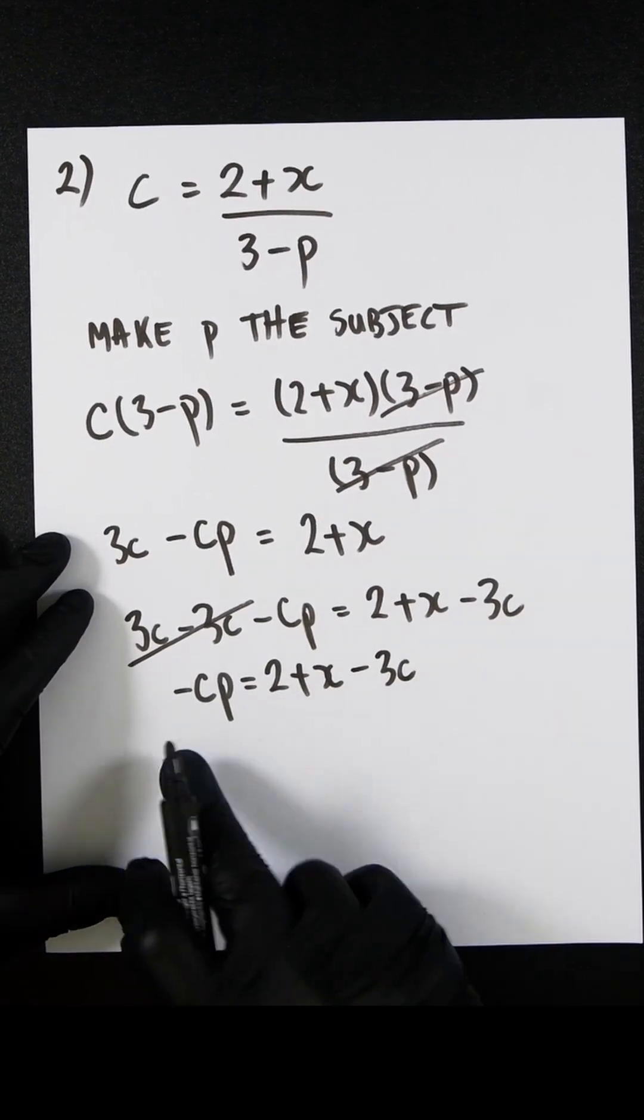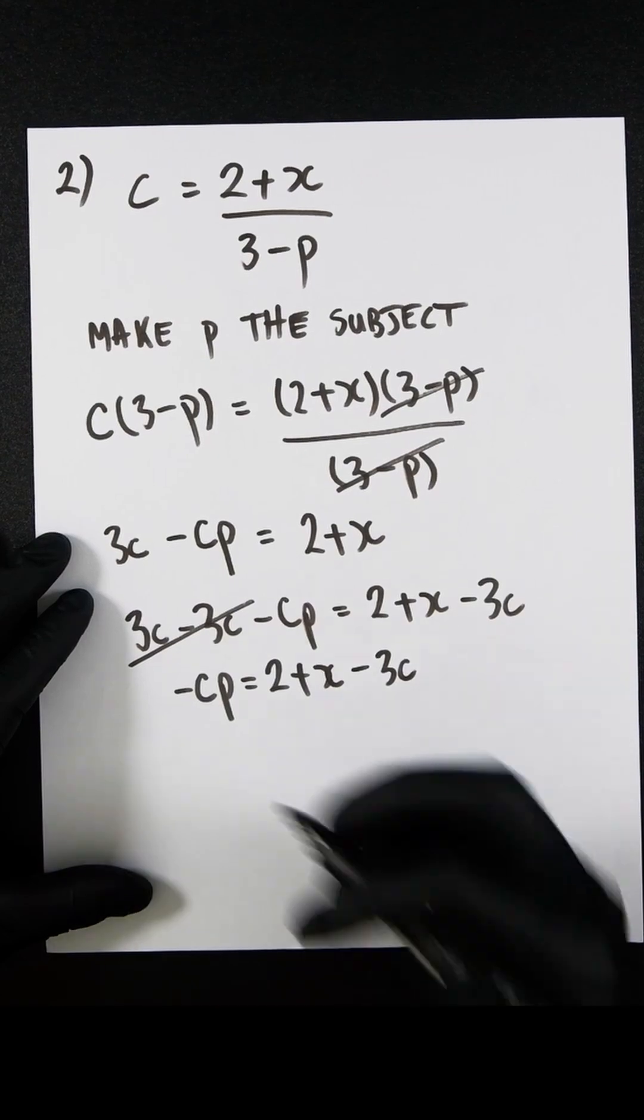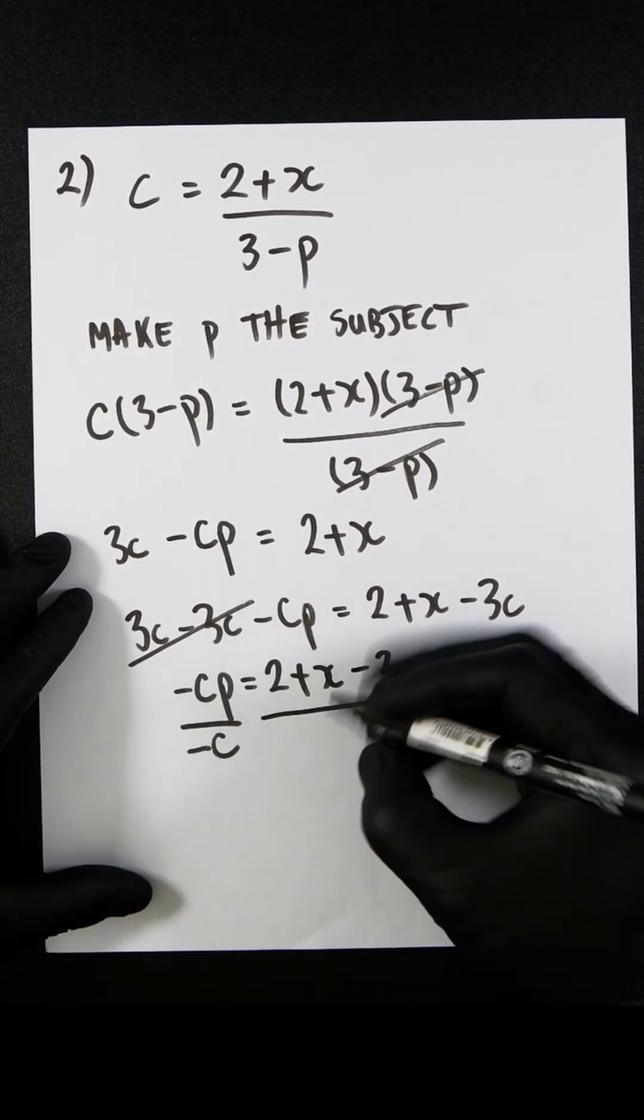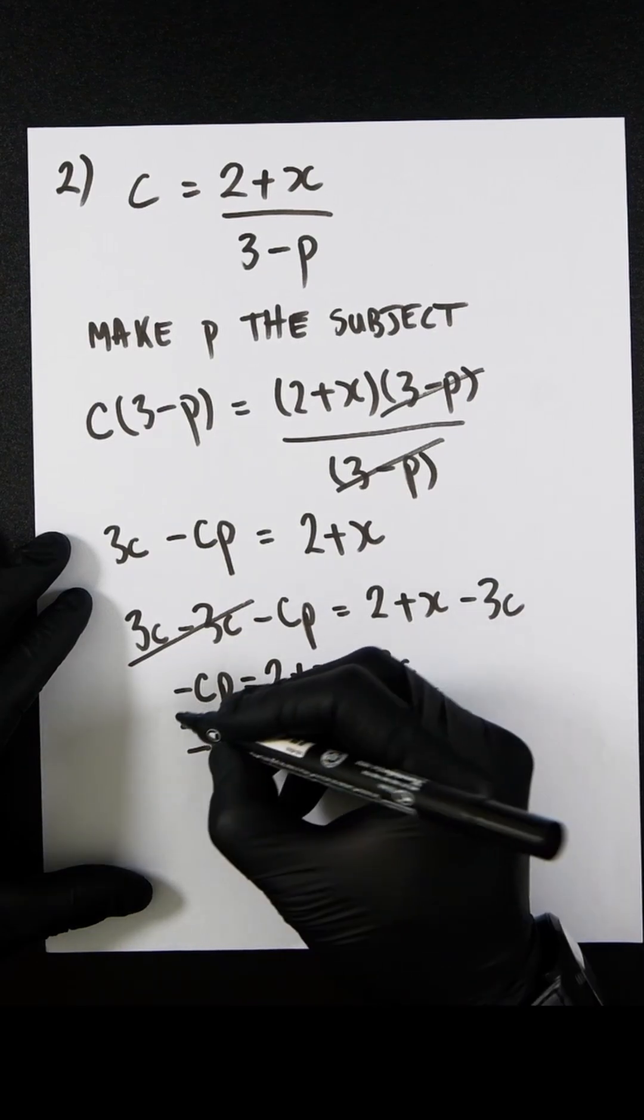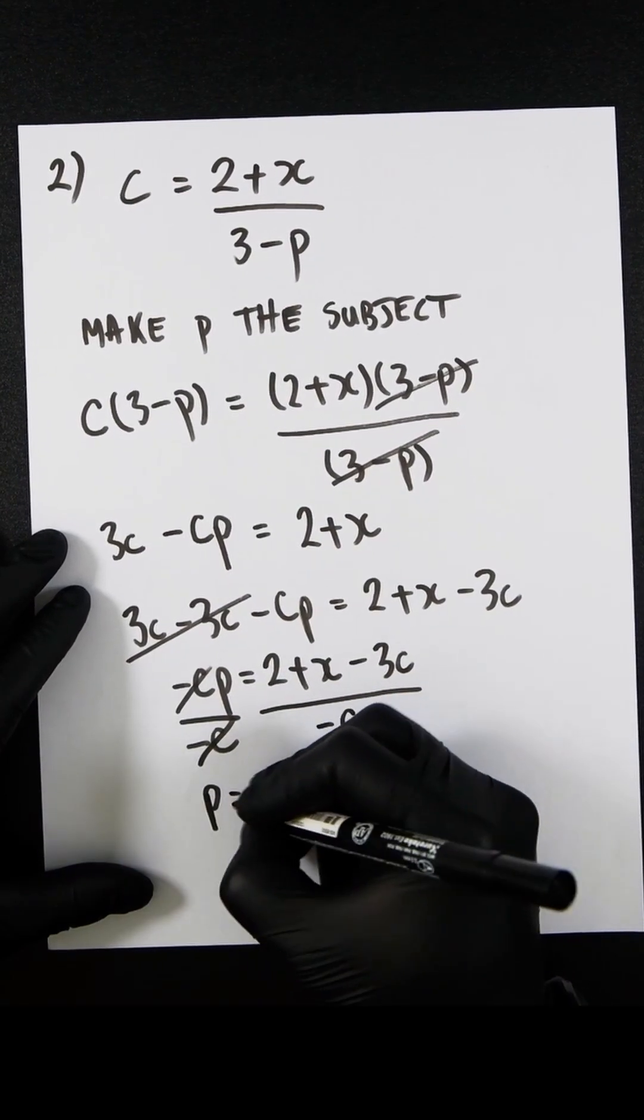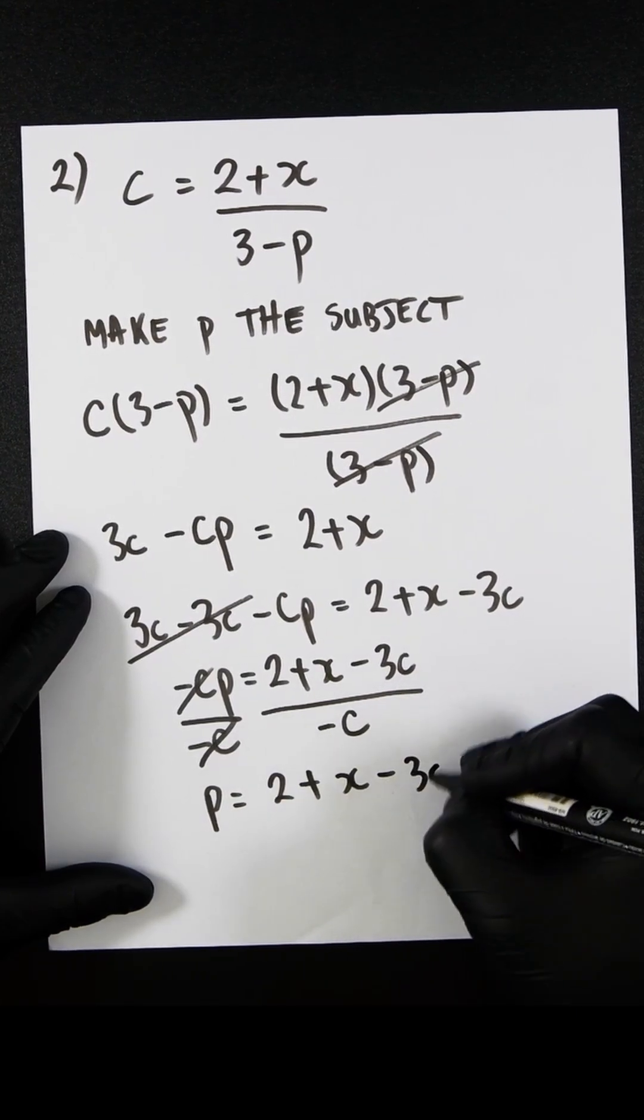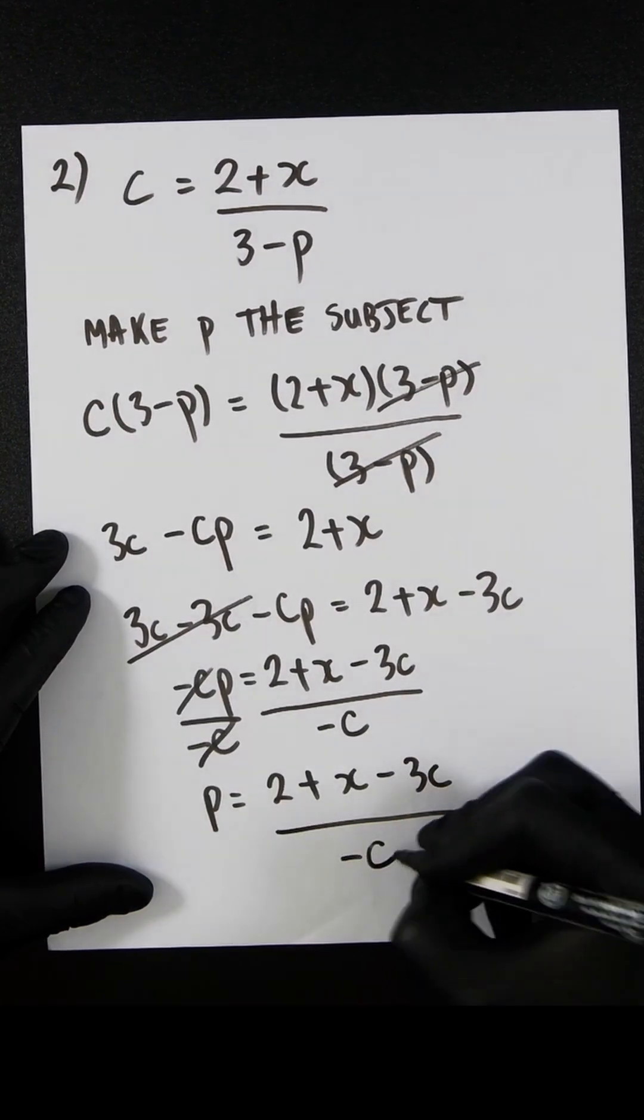If we divide both sides by minus c, we can eliminate the minus c that's with the p. These will cancel out, and we now have our solution: p equals (2 plus x minus 3c) divided by minus c.